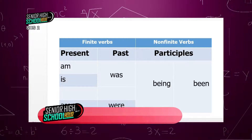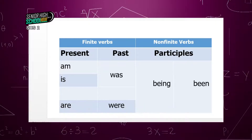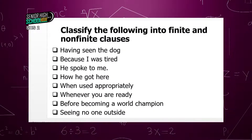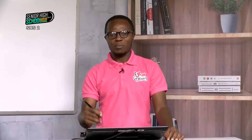The present participle of 'be' is 'being,' and the past participle is 'been.' All of them show finite and non-finite forms. Now we are to classify the following into finite and non-finite clauses, since we have understood that a finite verb is either present or past, and the non-finite is the ING form or the past participle form.